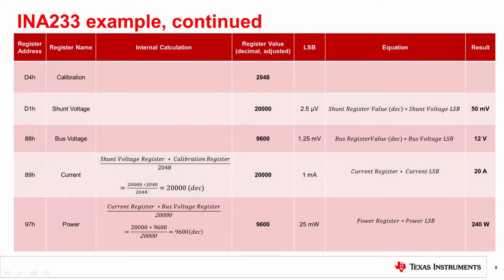Since all values match our expectations, we conclude that we have successfully programmed the INA233 using our simple two-step process. Other TI power monitors can be programmed in a similar fashion. In this example, we multiply the adjusted register values with their corresponding LSBs to get real-world readings of shunt voltage, bus voltage, current, and power. It would be equivalent when using the telemetry data conversion equation if provided in the datasheet.